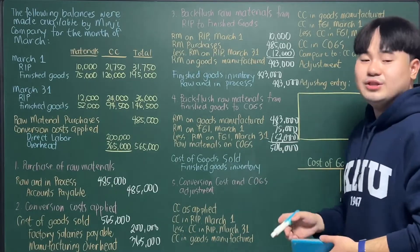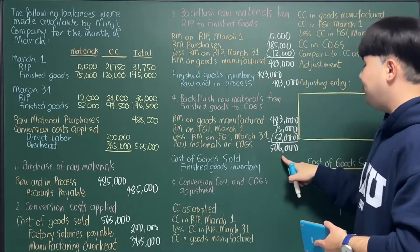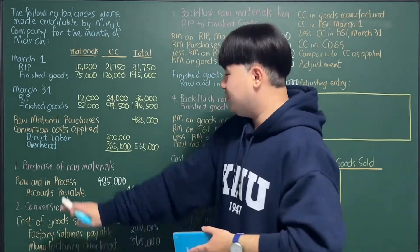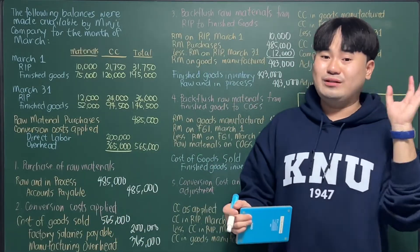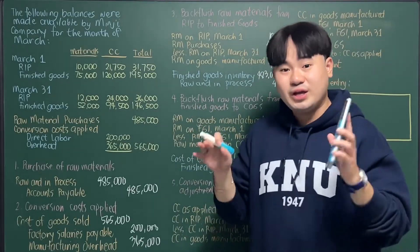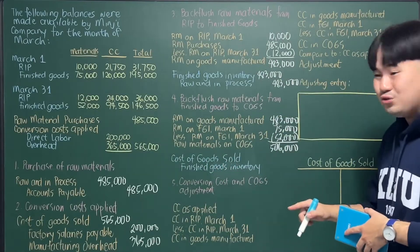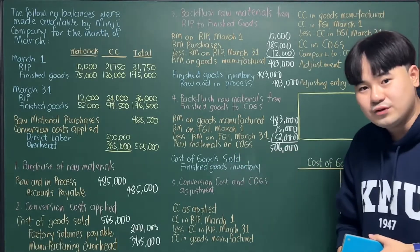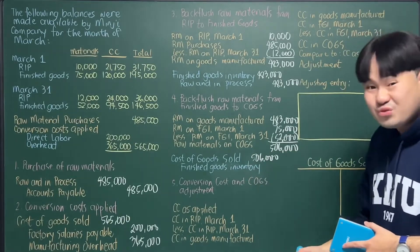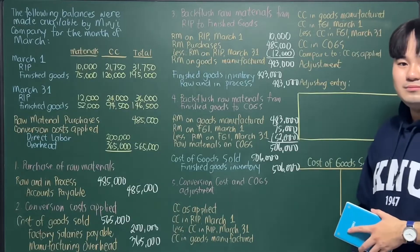We now have the raw materials component and the conversion cost component of cost of goods sold, but we still need to adjust conversion costs. For the $506,000 raw materials component of COGS, we debit cost of goods sold $506,000 and credit finished goods inventory $506,000. Now let's do the cost of goods sold adjustment through analysis of your conversion cost.